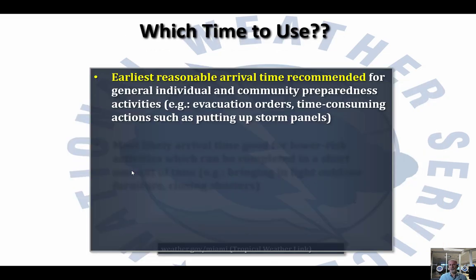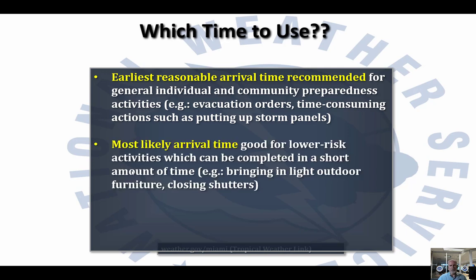So which time do you use? The earliest reasonable time is recommended for general individual and community preparedness activities. Things like evacuation orders that local officials enact are usually based on those earliest reasonable arrival times. Activities are time-consuming — for example, if you have to put up storm panels, those can take several hours. So the earliest reasonable arrival time gives you that window you need to safely finish your preparations before those tropical storm force winds arrive.